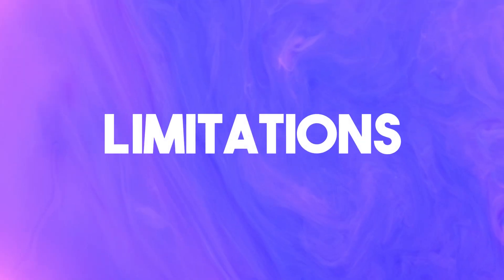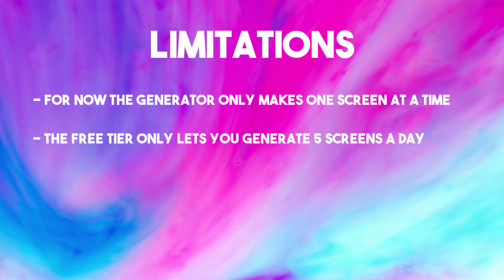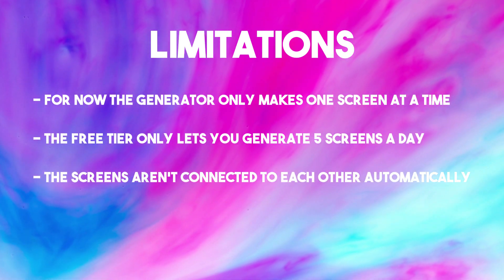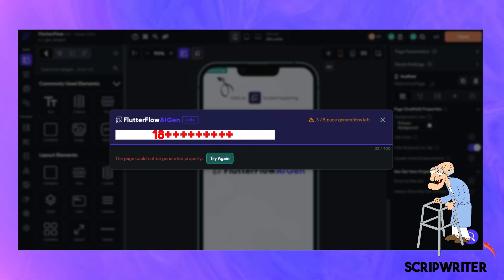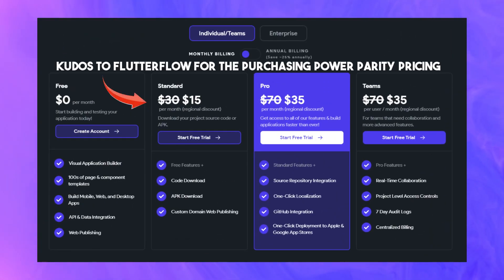On to limitations. For now, the generator only makes one screen at a time, and the free tier only lets you generate 5 screens a day. The screens aren't connected to each other automatically, so you'll still need to link the different layers and screens to each other. Also, the AI model is likely using OpenAI like everything else, which means it flags inappropriate content — I can't show you what my scriptwriter tried to generate, but I'm kind of glad it failed. And for God's sake, if you're serious, pay for a membership so you can get unlimited screens.